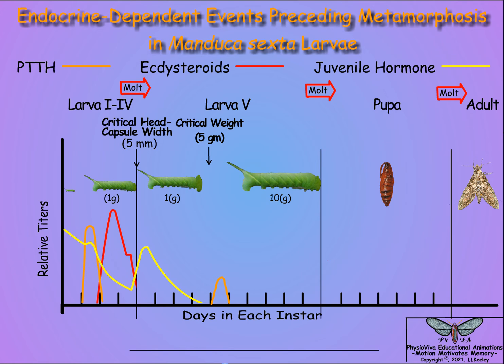In the absence of juvenile hormone, a pulse of prothoracicotropic hormone is released in an eight- to ten-hour period during the next photophase of the daily circadian cycle. The precise timing of the prothoracicotropic hormone pulse indicates it is a gated release to ensure subsequent molt-related events occur.